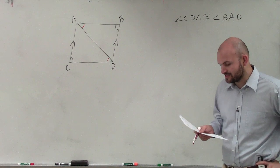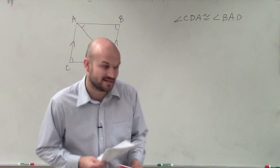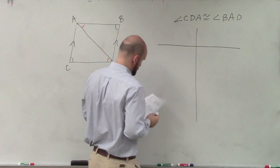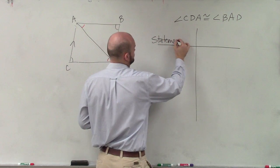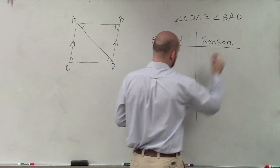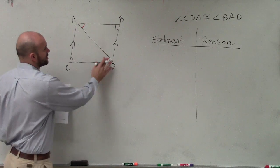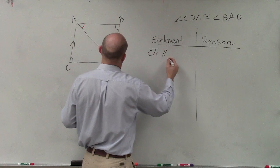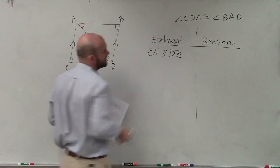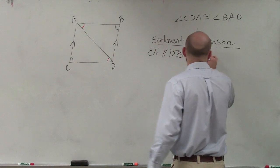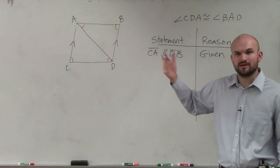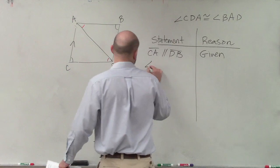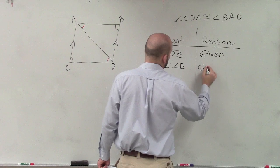Let's look at our given statements — that's always the basic thing we want to look at. We're going to be working on a two-column proof with a statement and a reason. The red is what we're trying to prove. What's given to us is that CA is parallel to DB, and that angle C is congruent to angle B.